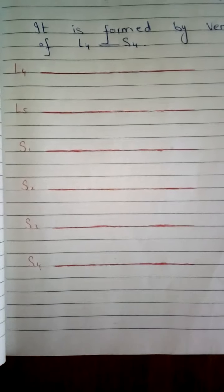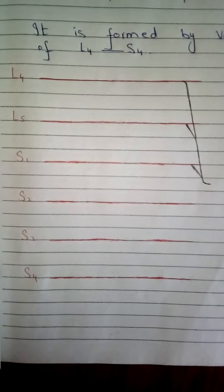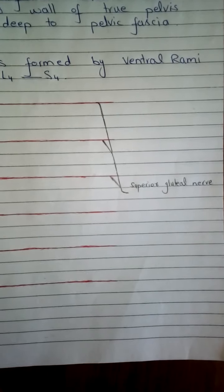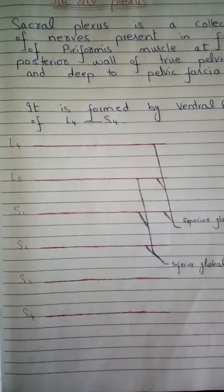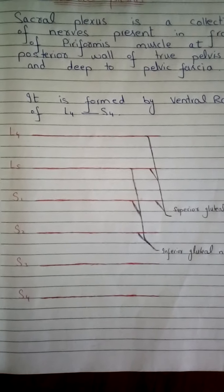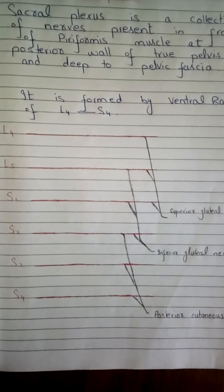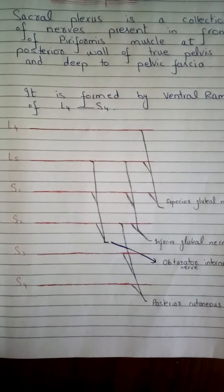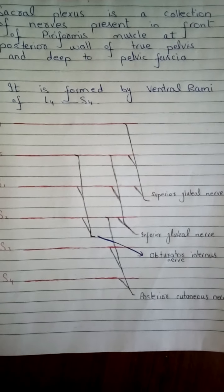Now I will draw the diagram of the sacral plexus. These red lines show the nerves of L4, L5, S1, and so on. Fibers from L4, L5, and S1 give the superior gluteal nerve. Nerve fibers from L5, S1, and S2 give the inferior gluteal nerve. Fibers from S2, S3, and S4 give the posterior cutaneous nerve. Fibers from L5, S1, and S2 give the obturator internus nerve.